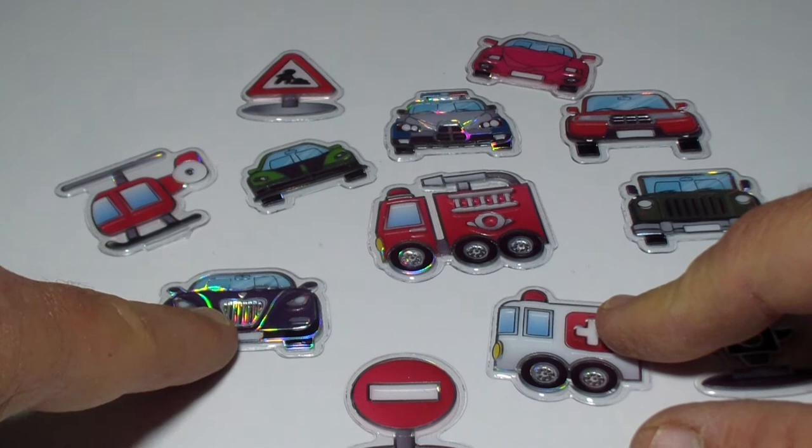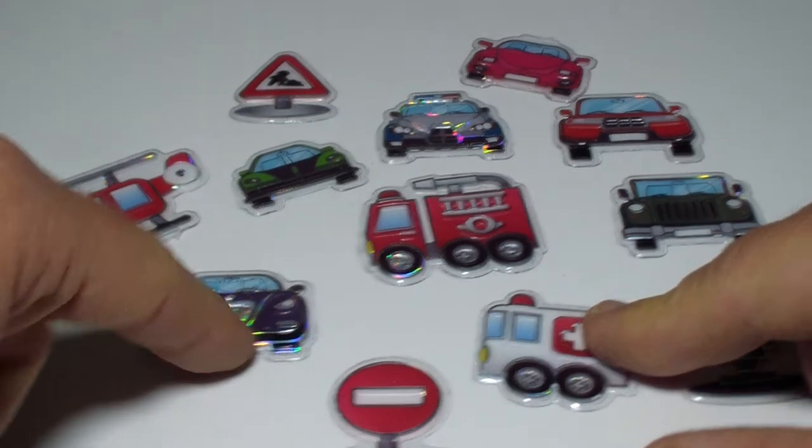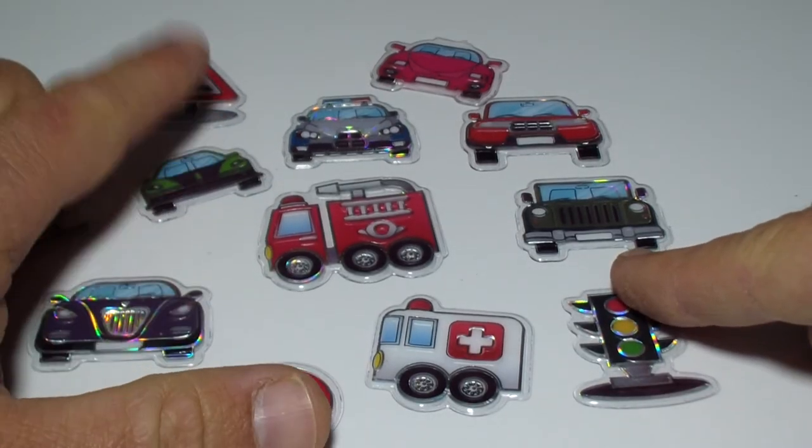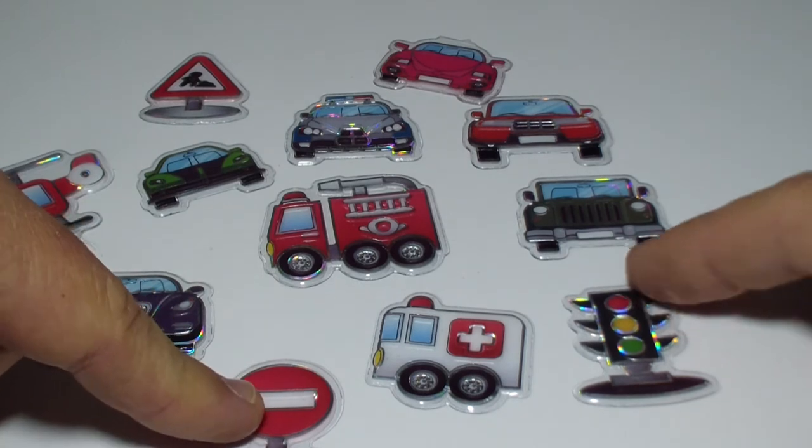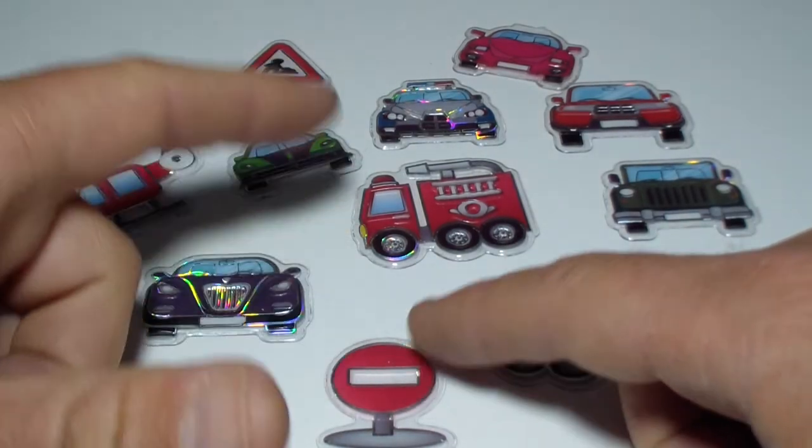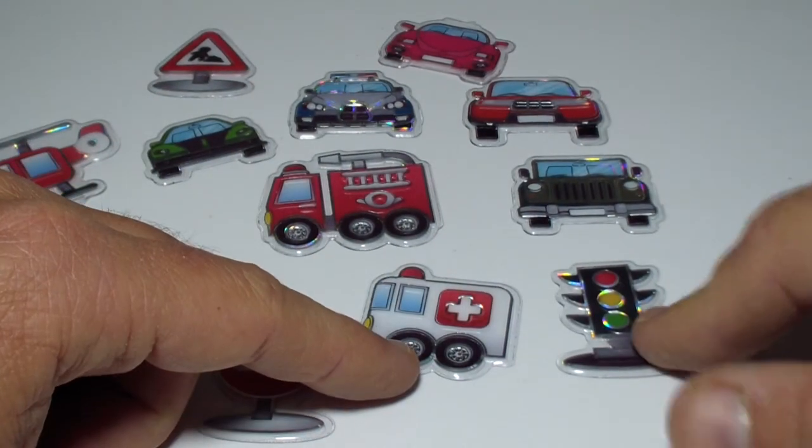And what else? We have a Rolls Royce. Looks like a Rolls Royce. A black one. And signs. We have a working on road sign. And we have a stop sign. And we... No, that's not a stop sign. That's a no entrance sign. What am I saying? And that's a traffic light.